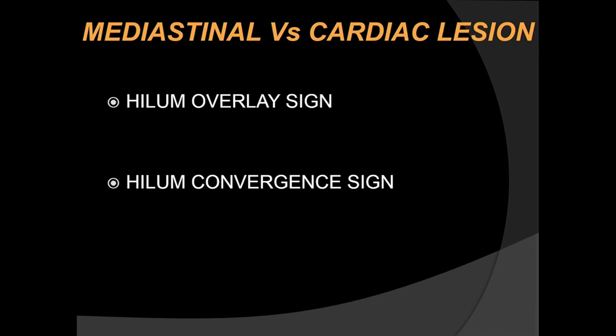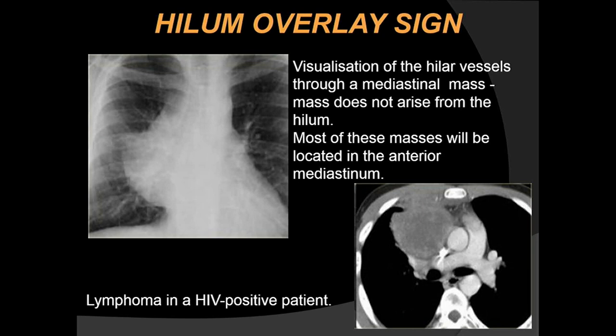To differentiate between mediastinal and cardiac lesions, we have the hilum ovuli sign and the hilum convergent sign. The hilum ovuli sign states that if you can visualize the hilar vessels through a mediastinal mass, then the mass does not arise from the hilum. In this example, a large mass is present and we can see the pulmonary hilar vessels through it, confirming it does not arise from the hilum — most such masses will be in the anterior mediastinum.